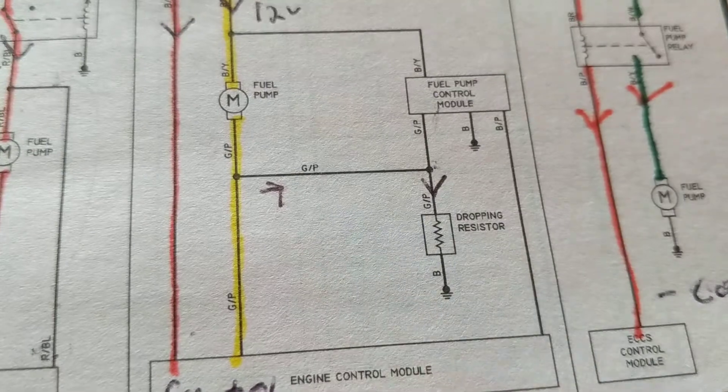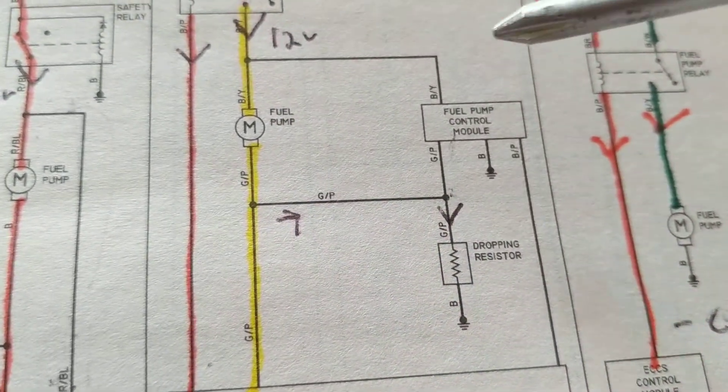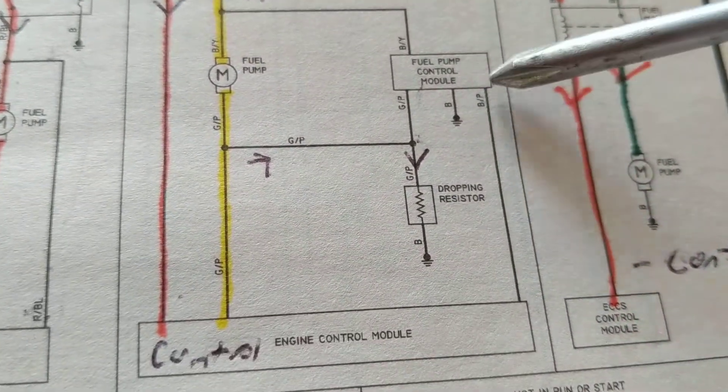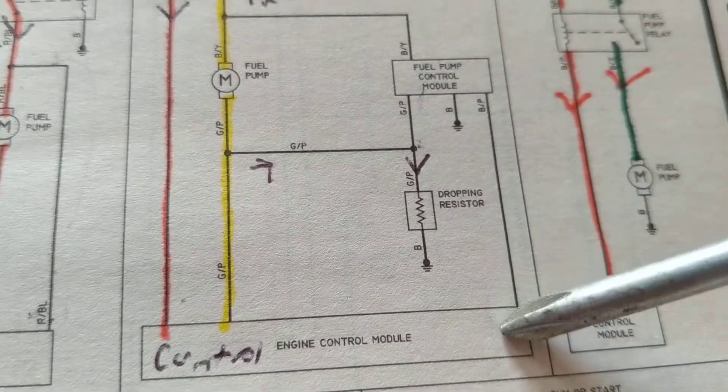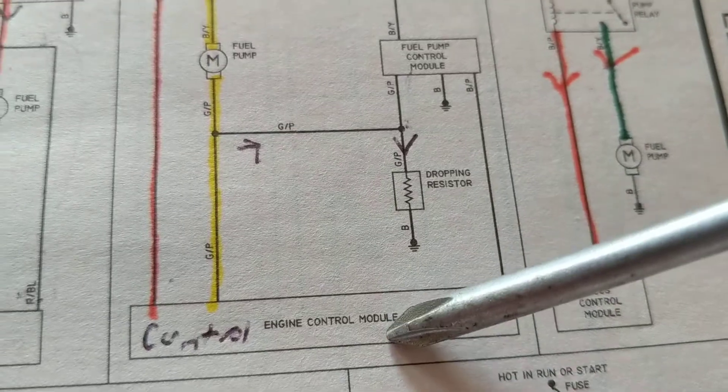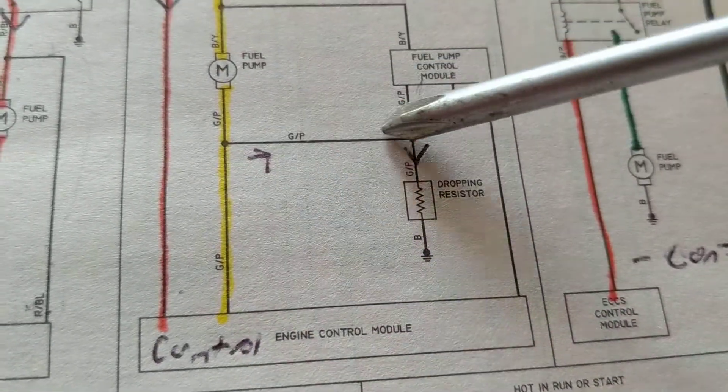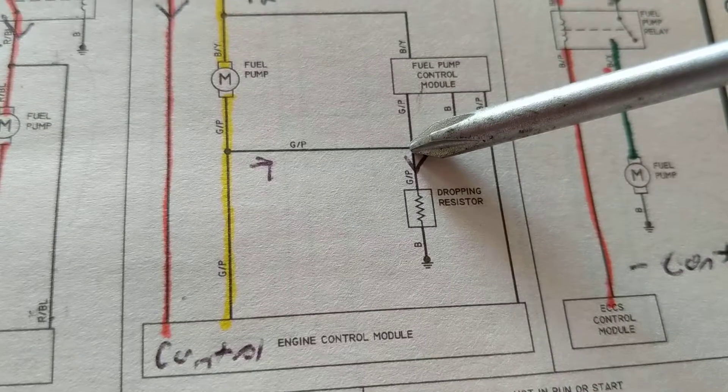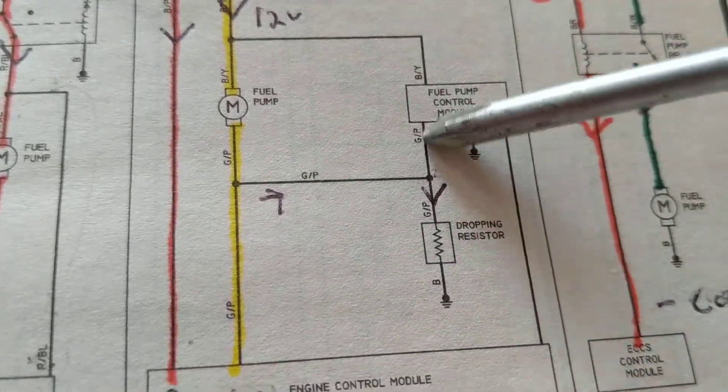So therefore, how do I know? Well, probably this is communicating to this. This is the computer, this is the brain over here, engine control module, and telling it okay, now we're gonna have a resistor, we're gonna have a voltage drop. And this part here probably sees how much the voltage drop is.